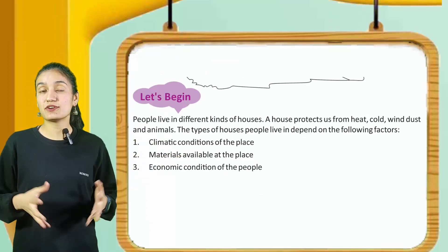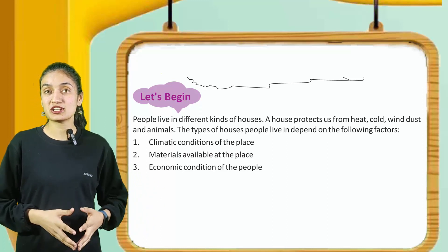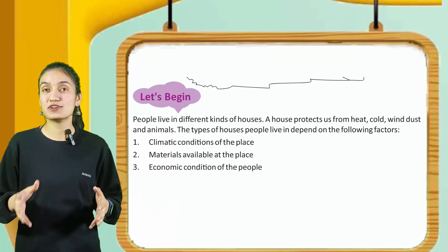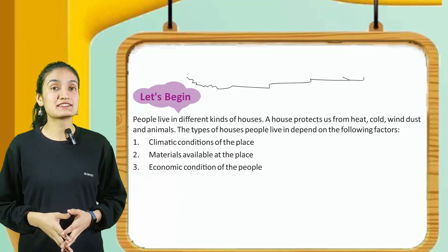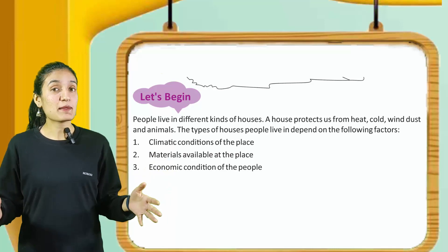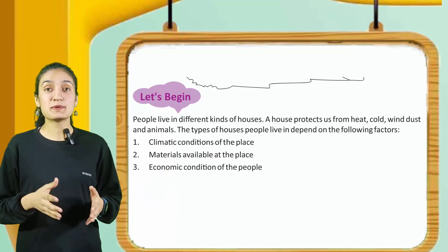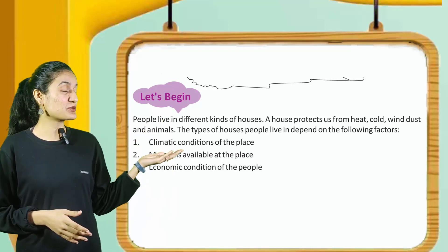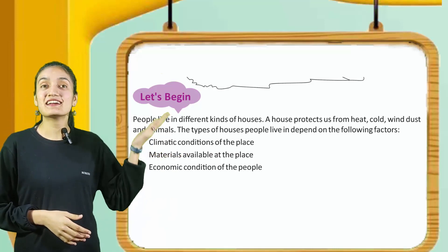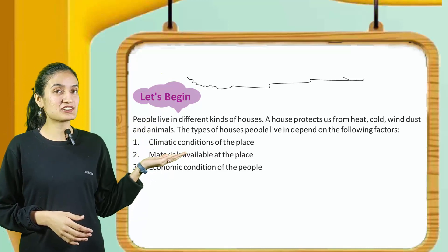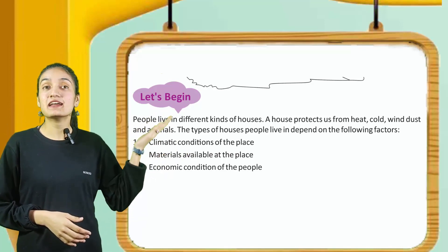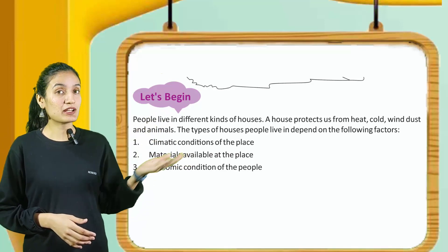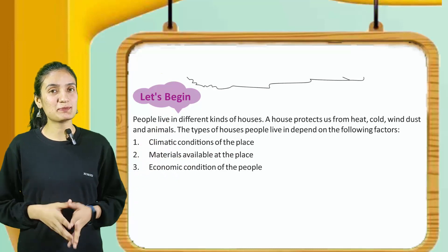People live in different kinds of houses. A house protects us from heat, cold, wind, dust and animals. The types of houses people live in depend on the following factors: climatic condition of the place, materials available at the place, and economic condition of the people.